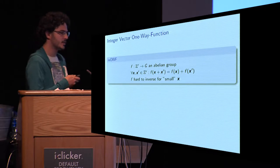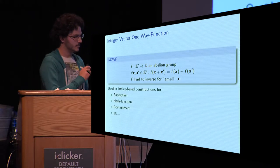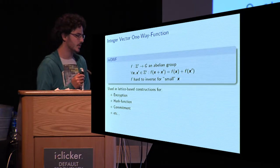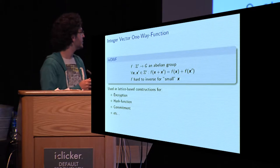Why do we care about integer vector one-way functions? Because they are used in basically all lattice-based constructions, such as encryption, hash functions, commitments, and so on and so forth.